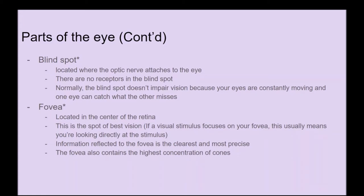The blind spot is located where the optic nerve attaches to the eye, and there are no receptors there. Normally the blind spot doesn't impair vision because your eyes are constantly moving and one eye can watch what the other misses. The fovea is located in the center of the retina and is the spot of best vision. Information reflected onto the fovea is the clearest and most precise because it contains the highest concentration of cones.